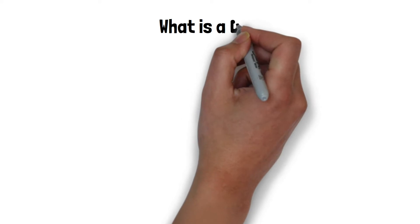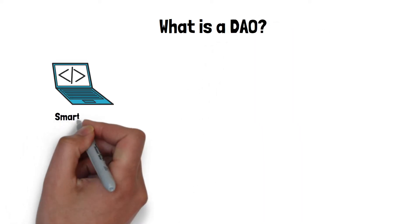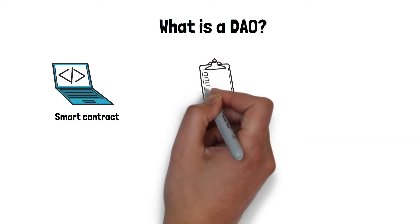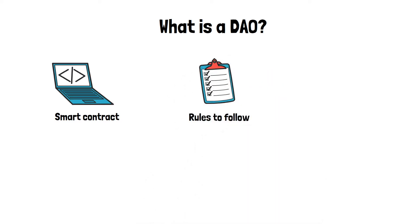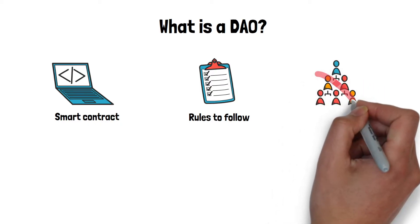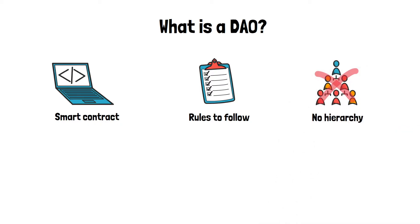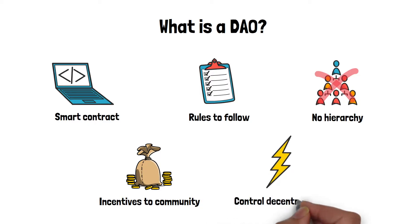What is a DAO? At its core, a DAO is a smart contract — a piece of code which defines the rules of how the organization should run. Unlike traditional organizations, there is no hierarchy to DAOs. To align the interests of the organization with that of its members, DAOs incentivize their users to achieve their goal. A key distinction from traditional organizations is that the control is decentralized.